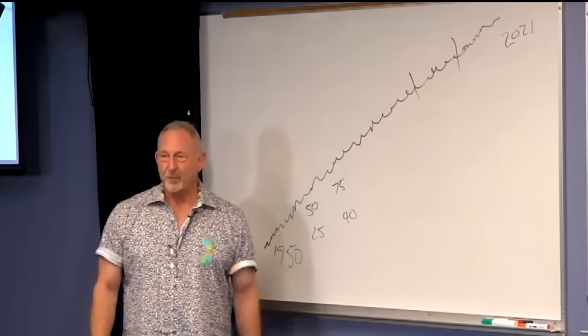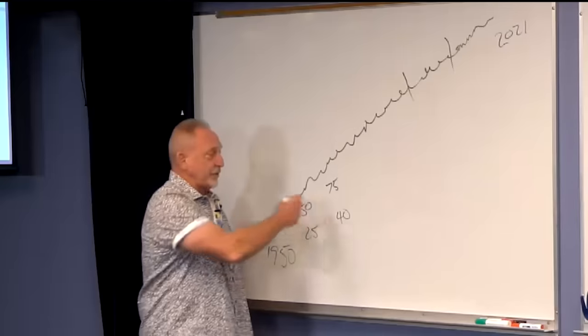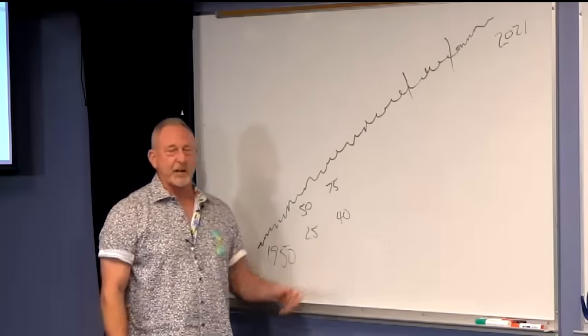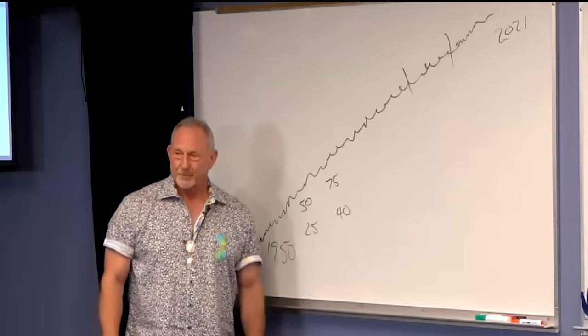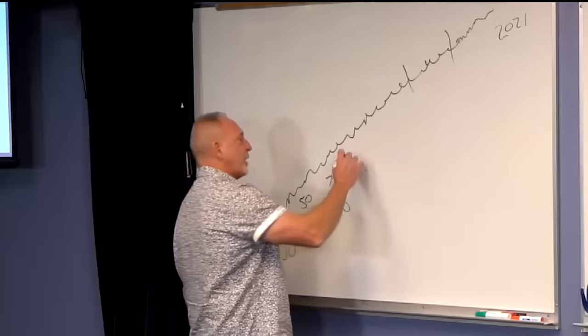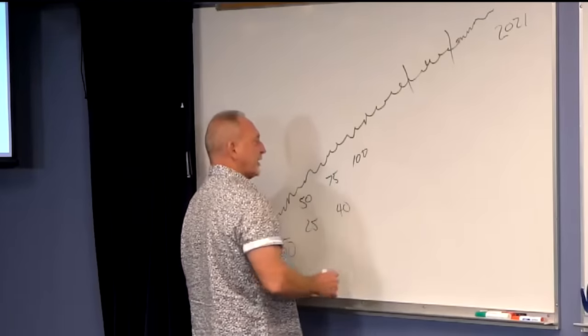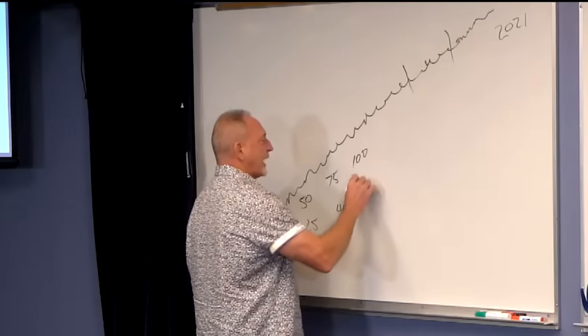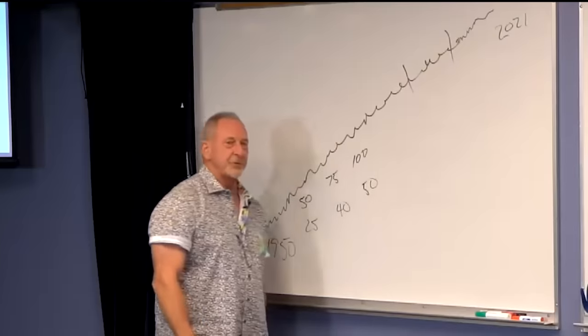I started buying apartments. Then I started Lifestyles Unlimited and let you guys buy them for these ridiculous prices of $40,000 a door. By no time at all, they were up to $100,000 in median value and we were buying them for $50,000.